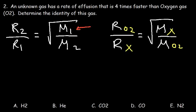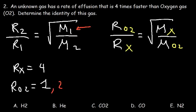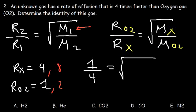The unknown gas has a rate of effusion 4 times faster than oxygen gas. So if the rate for oxygen is 1, the rate for the unknown gas is 4. The ratio is 1 to 4 — it doesn't matter which numbers you use as long as that ratio holds. We plug in 1 for O2 and 4 for the unknown gas. The molar mass of O2 is 16 times 2, which is 32.